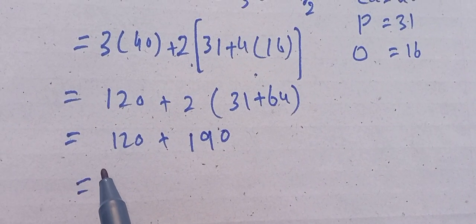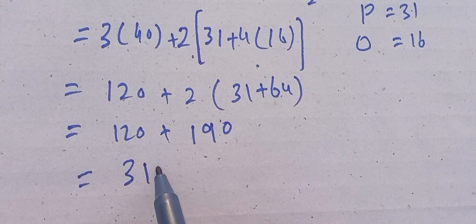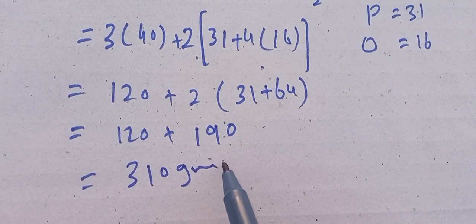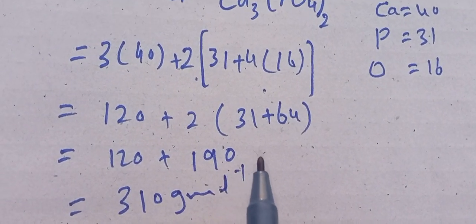After the addition of these two values, 190 and 120 equals 310 grams per mole. This is the molecular mass of calcium phosphate.